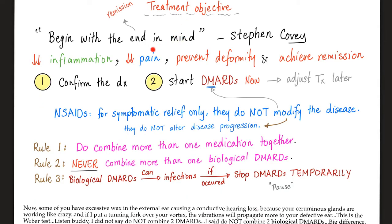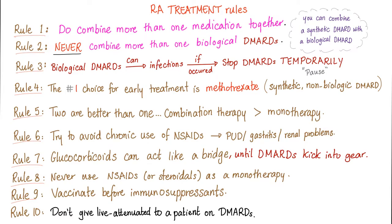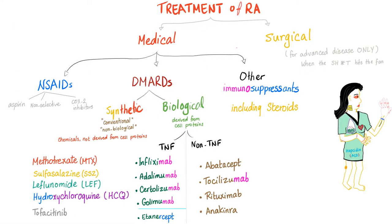Once you confirm the diagnosis of rheumatoid arthritis, you start treatment immediately with DMARDs. These are the 10 rules of treatment of rheumatoid. Treatment consists of medical and surgical. Medical options include non-steroidals, DMARDs, and others. DMARDs are synthetic or biologic. Synthetic include methotrexate, sulfasalazine, leflunomide, hydroxychloroquine, tofacitinib, and other JAKi inhibitors we will cover in the next video.